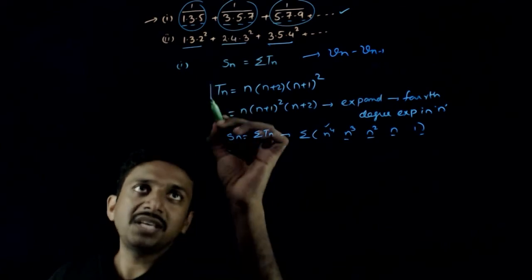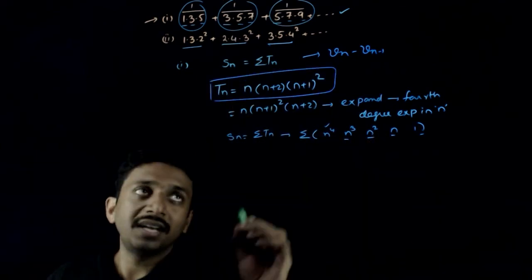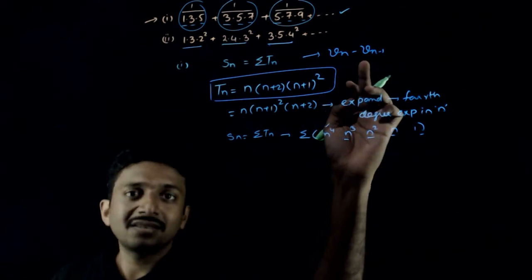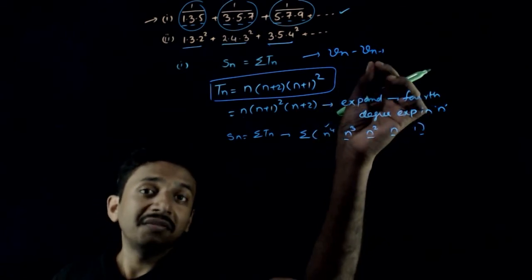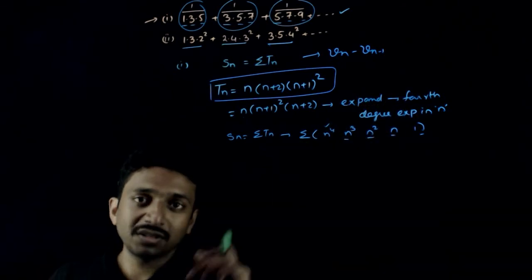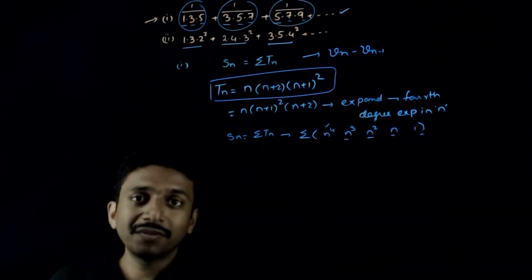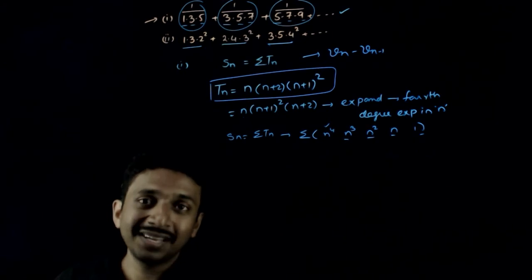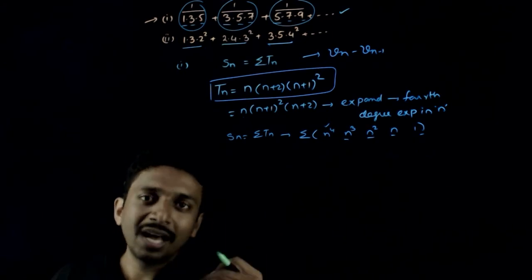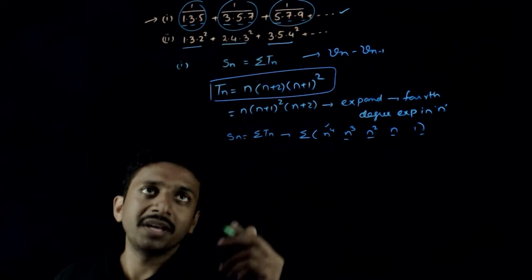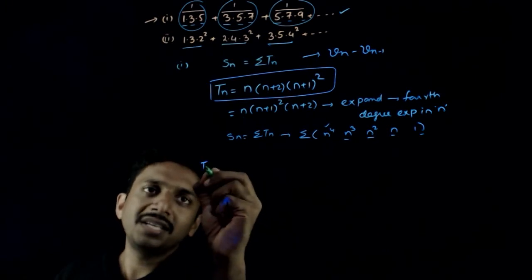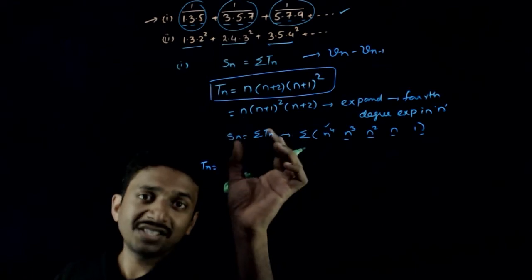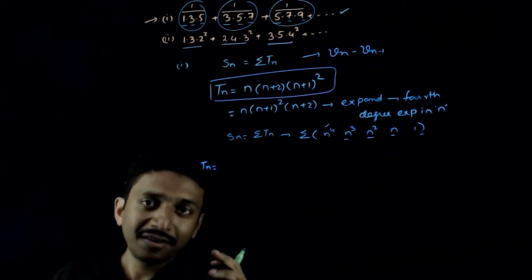In the Vn − Vn−1 technique, we express Tn as the difference of a function of n minus the same function with n−1 in place of n. This is one of the difficult parts of this chapter — how to write it requires some trial and error.